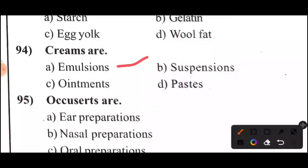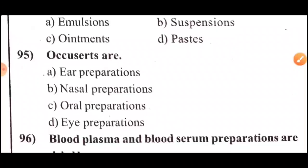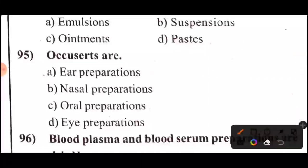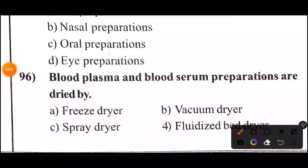Question 95: Accusers are — Option D: Lyophilized preparation. Question 96: Blood plasma and blood serum preparations are dried by?